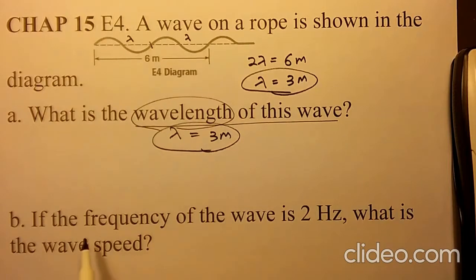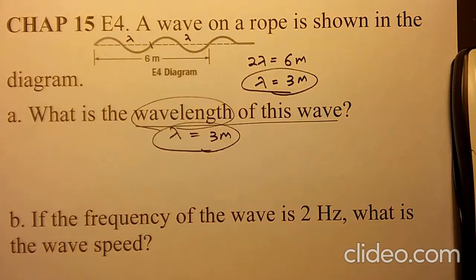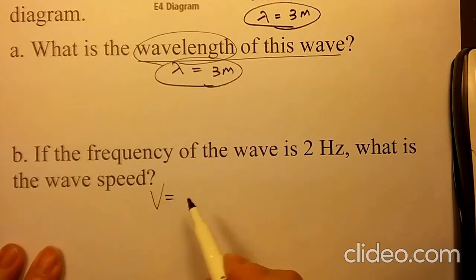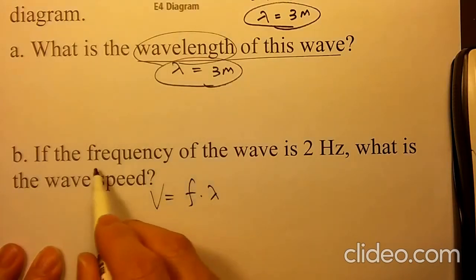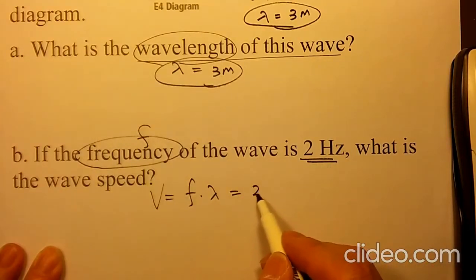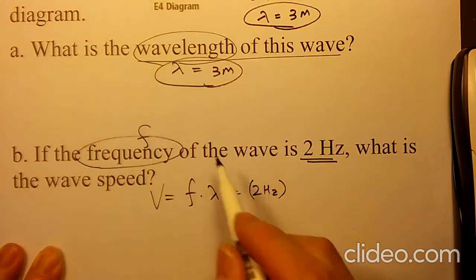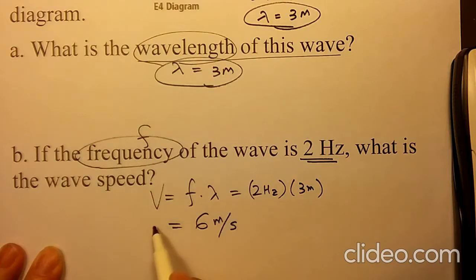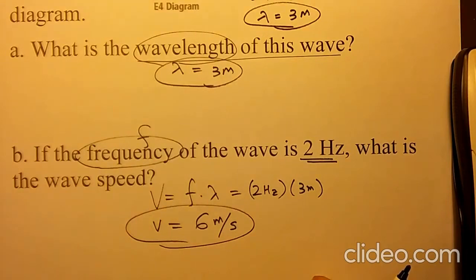And if the frequency of the wave is 2 hertz, what is the wave speed? Wave speed velocity is F times lambda. The frequency F equals 2 hertz, so 2 hertz times your lambda of 3 meters gives you 6 meters per second as your wave speed.